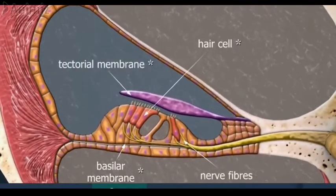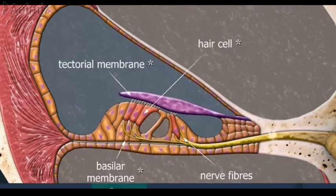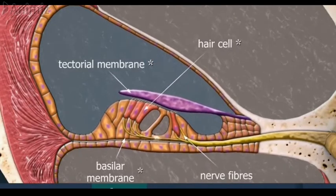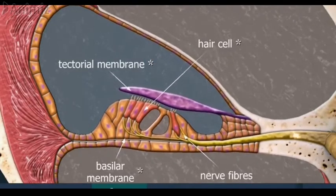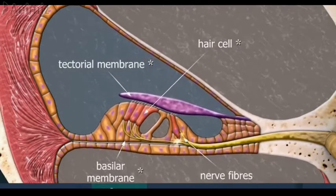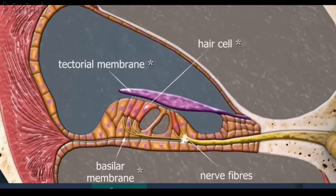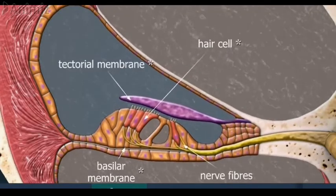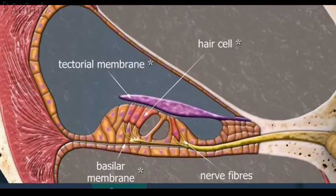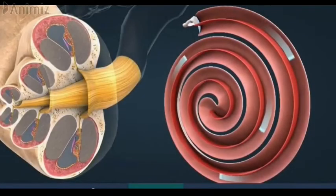How do we hear? The physiology of hearing, just like its anatomy, is very complex indeed and is best understood by looking at the role played by each part of our hearing system. Sound waves, which are really vibrations in the air around us, are collected by the pinna on each side of our head and are funneled into the ear canals. These sound waves make the eardrum vibrate.